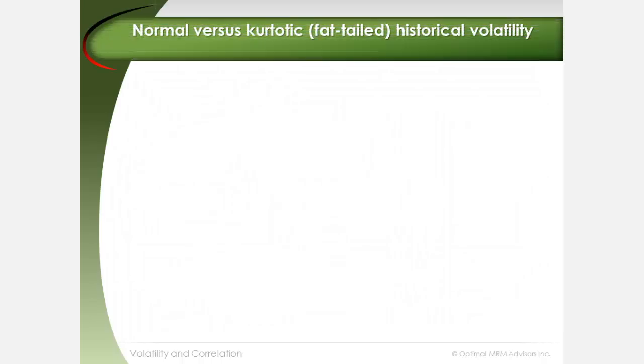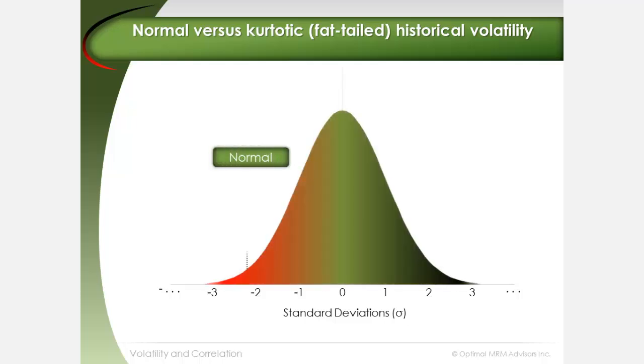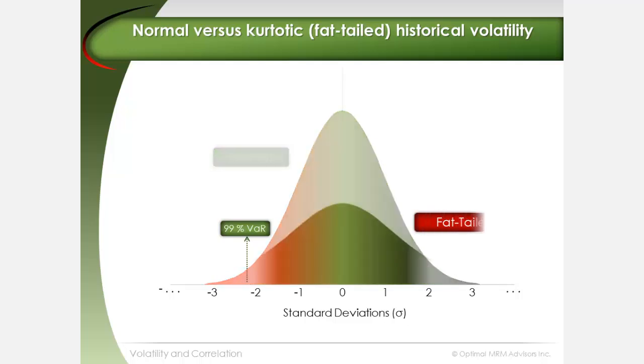Kurtosis is a measure of the way in which risk factor returns are dispersed around an average return. A normal distribution has zero kurtosis. A high kurtosis distribution has fat tails.